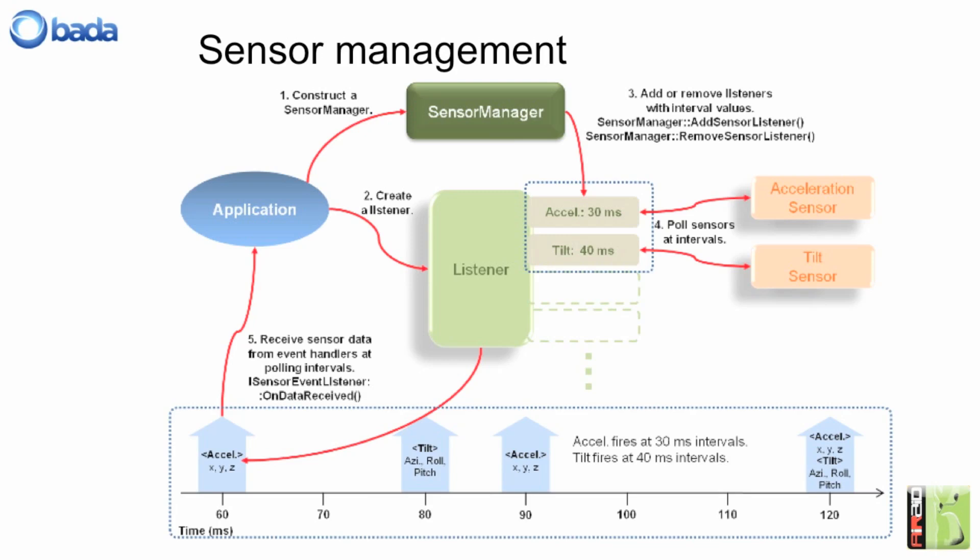The acceleration sensor is going to report back acceleration data every 30 milliseconds, and the tilt sensor will report back every 40 milliseconds. What we're doing here is creating a class called SensorSample, and it's inheriting from an interface class, iSensorEventListener. All interface classes in Bardo are abstract classes, which means there's a pure virtual method contained within that class which has to be overridden. That pure virtual method is onDataReceived. By inheriting from the iSensorEventListener class, once we construct the sensor, it will report back to our application through the onDataReceived method, which the application framework will call when data is available.